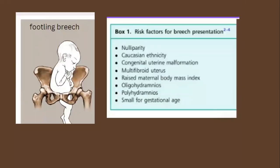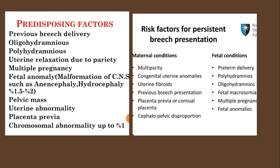Risk factors for breech presentation include nulliparity, Caucasian ethnicity, congenital uterine malformations, fibroids, obesity, oligohydramnios, polyhydramnios, small for gestational age, and prematurity. Predisposing factors from the RCOG include previous history of breech delivery, extremes of amniotic fluid (oligo and poly), uterine relaxation in multiparity, multiple pregnancies, fetal anomalies such as anencephaly and hydrocephalus, pelvic mass obstructing the baby's descent, uterine abnormalities, placenta previa, and chromosomal anomalies up to 1%.